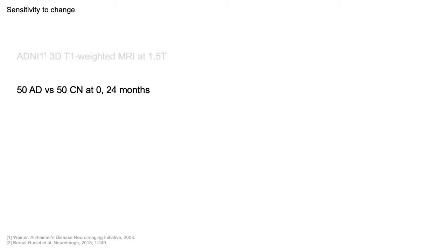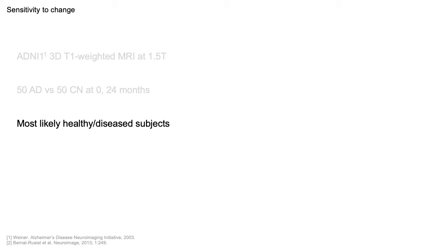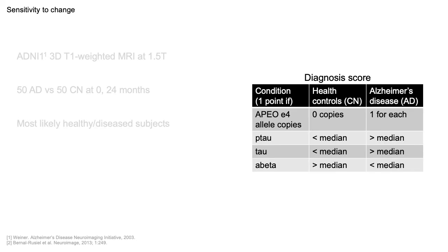We assessed sensitivity to cortical thinning in a subset of T1-weighted MRI data from ADNI. Specifically, we compared 50 Alzheimer's disease subjects to 50 healthy controls with time points at 0 and 24 months. We selected the most likely healthy and diseased subjects based on a score attributing one point for each of the conditions shown in the table, where the reference thresholds were evaluated as the median of a subject with mild cognitive impairment. Data was processed using the standard longitudinal FreeSurfer stream, except for the initialization with the segmentation and surfaces from the non-rigid template, that were rigidly mapped to each of the time points.